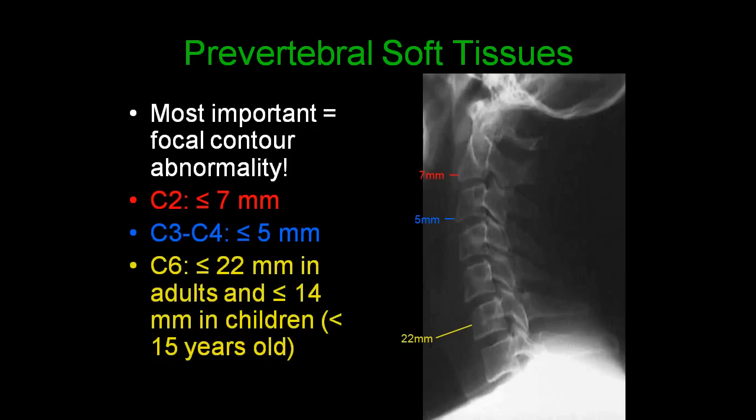When looking at the prevertebral soft tissues, the most important thing to look for is a focal contour abnormality. At the level of C2, the prevertebral soft tissue should be less than or equal to 7 mm. At the C3-C4 level, less than or equal to 5 mm. At the C6 level, less than or equal to 22 mm in adults and 14 mm in children under 15 years old. At the C5-6 level, there is a natural slight increase in the size of the prevertebral soft tissues because the esophagus starts in this region.